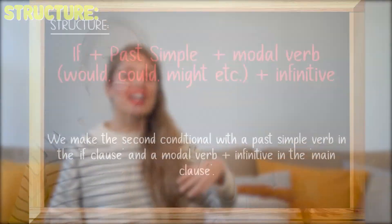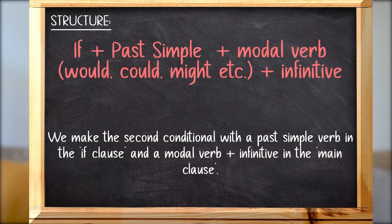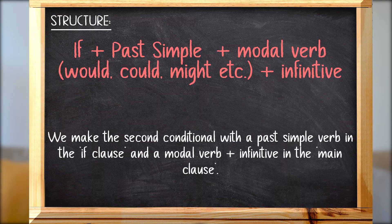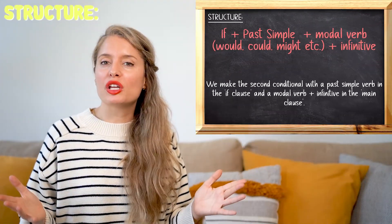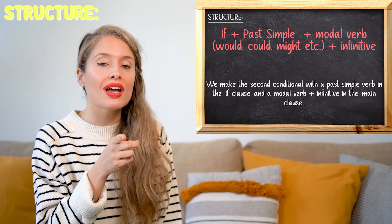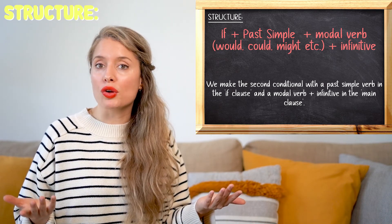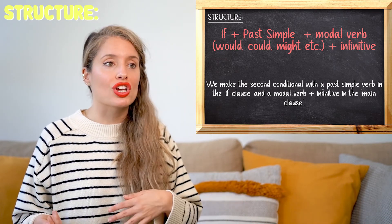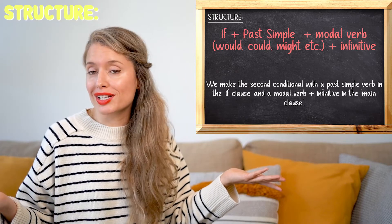To form the second conditional, we take IF plus the past simple in the IF clause, and WOULD — or any other modal verb — plus the infinitive in the main clause. Typically you would use WOULD, but you can also use other modal verbs such as COULD or MIGHT.